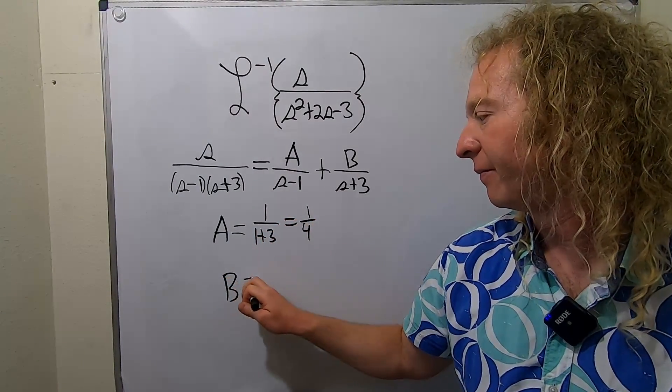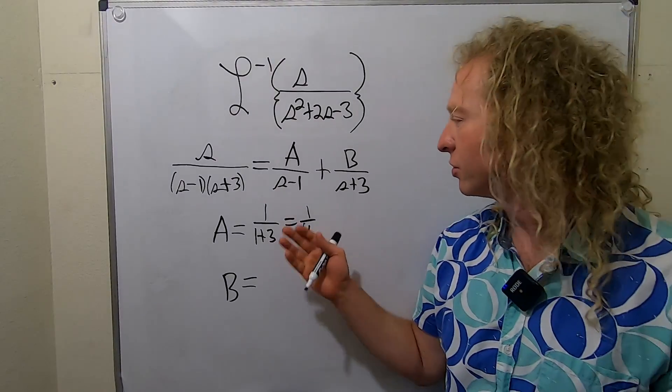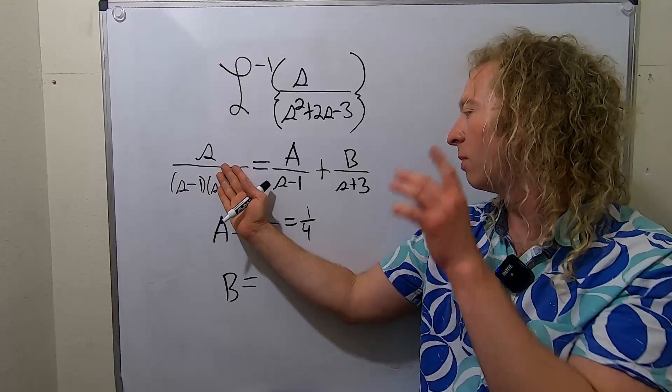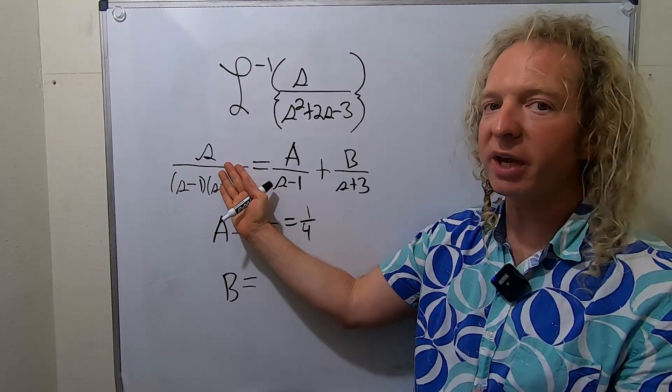Let's find big B. So to find big B, again, you just cover up what's under the B. So you go over here and you cover it up. And you say, hey, what makes the bottom problematic? What makes the bottom 0? Well, negative 3.